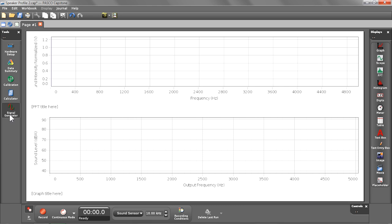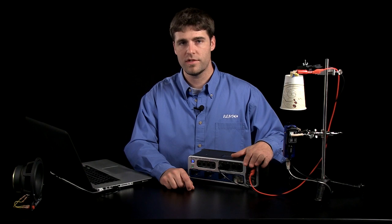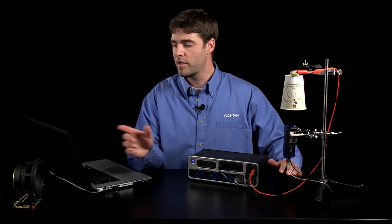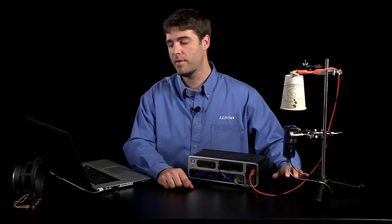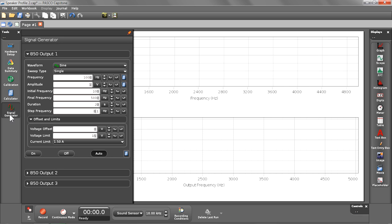As I mentioned we'll be driving the speaker using the output function generator on the 850. So let me go ahead and explain the controls that I have set up already. As you can see we'll be driving the speaker using a one volt sine wave and we'll be sweeping through a band of frequencies starting at 100 hertz and ending at 5 kilohertz. The sweep should take 20 seconds and the step frequency should be 0.1 hertz.